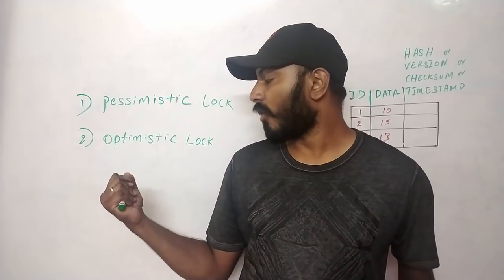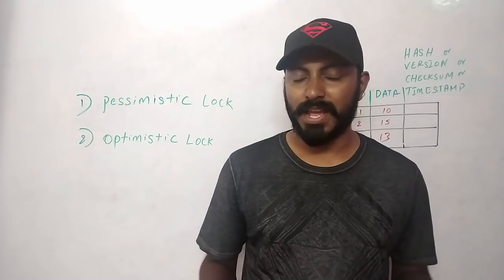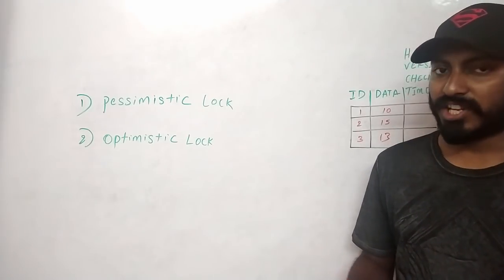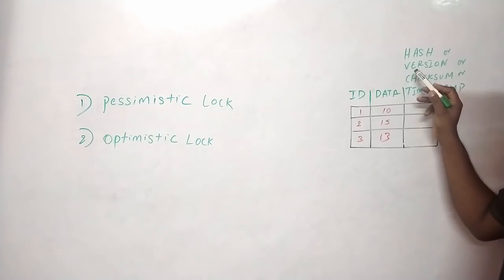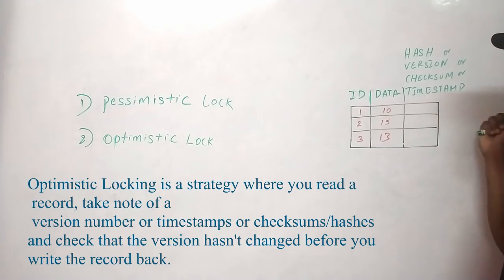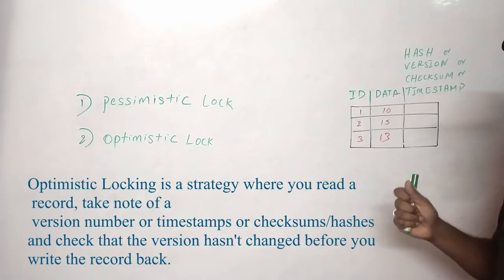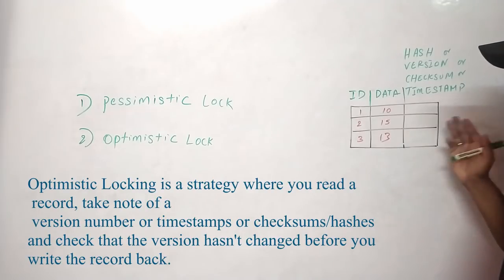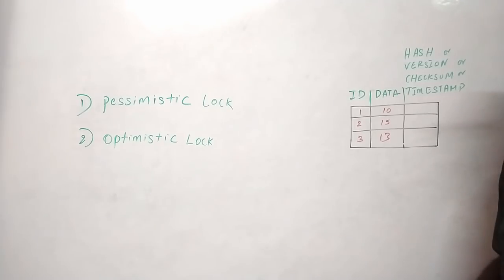Now let's learn about optimistic lock. As the name itself says, it always thinks good things are going to happen. The definition of optimistic lock is a strategy in which you read a record and also record the timestamp, checksum, version, or hash, and check whether that version or information is the same before you write. If the information is the same, you can update the record. If it is different, you should not update — you just need to discard that record.